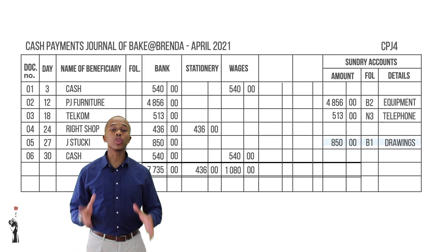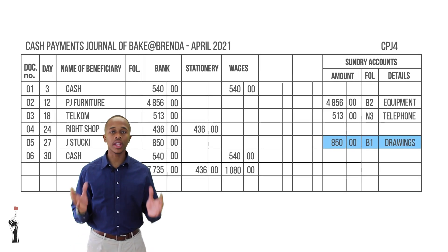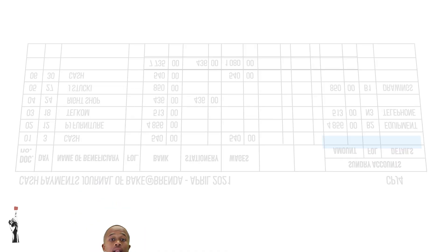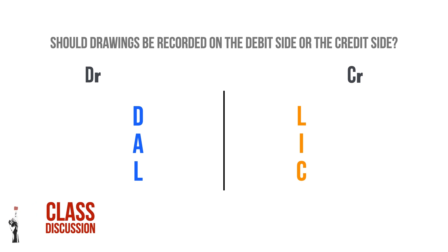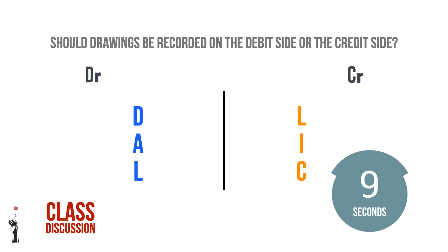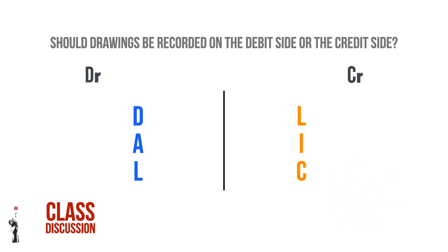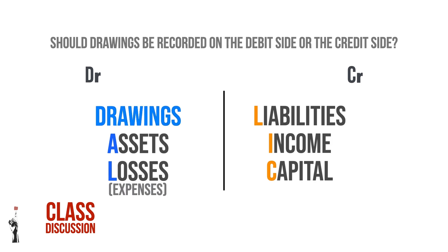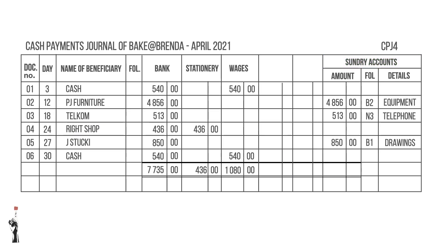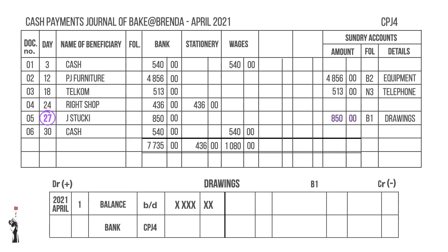We will start with drawings, remembering the correct order of the general ledger. Grade 8s, do you remember DALEK, our acronym? Pause this video and discuss with your classmates whether drawings should be recorded on the debit side or the credit side. From the acronym DALEK, the D stands for drawings, which means that drawings increases on the debit side. Because it is a sundry account, the date used in the general ledger is the specific date the transaction took place — in this example, the 27th of April.